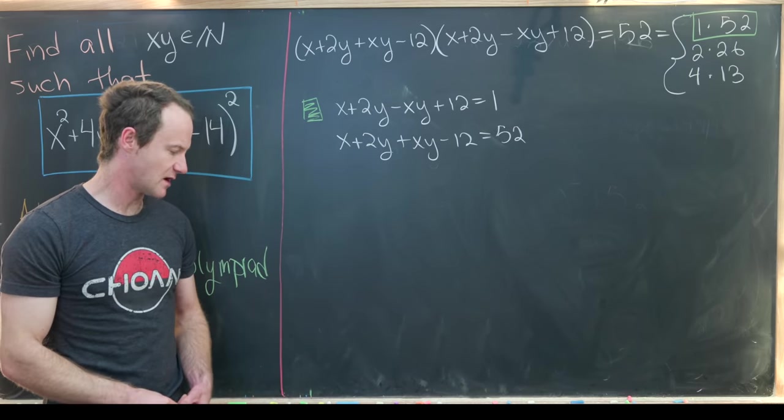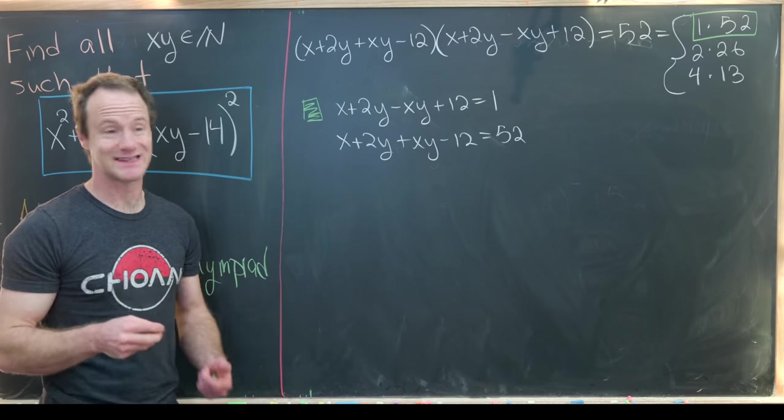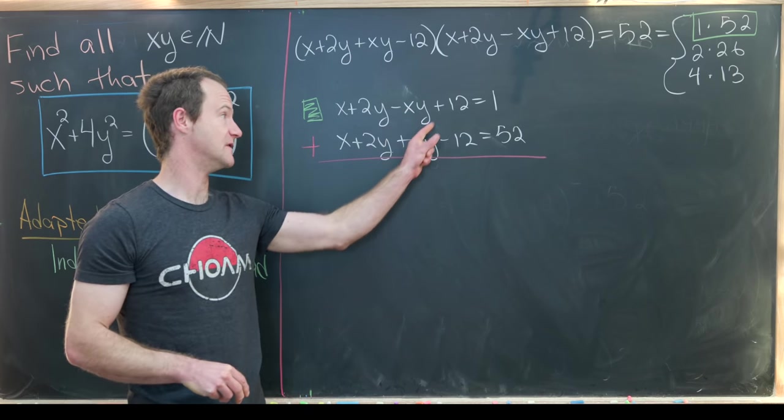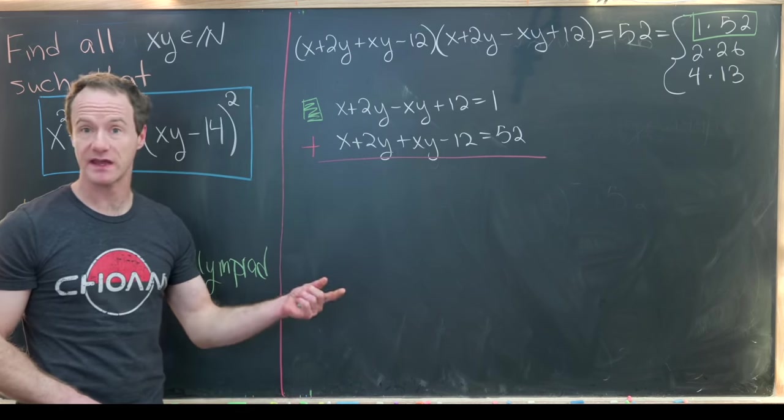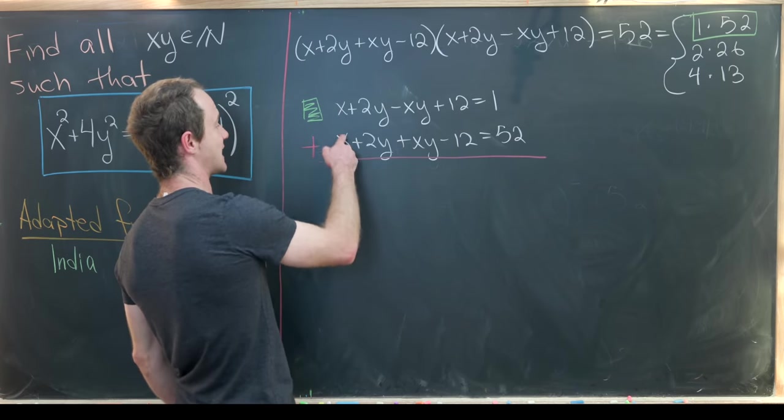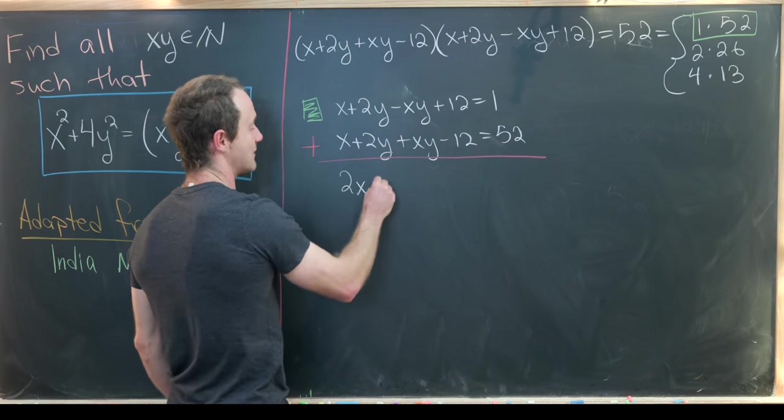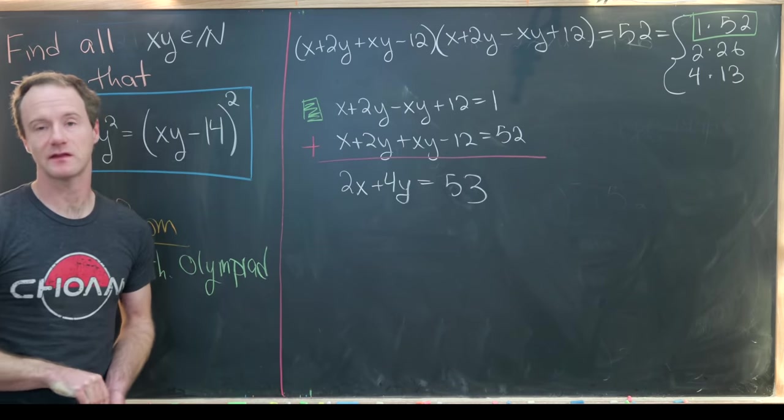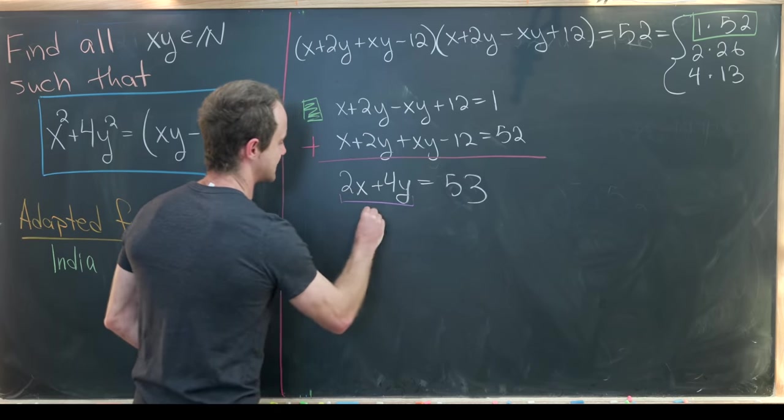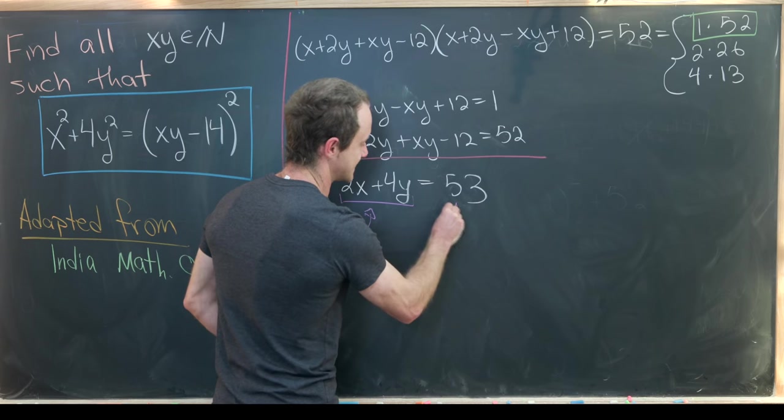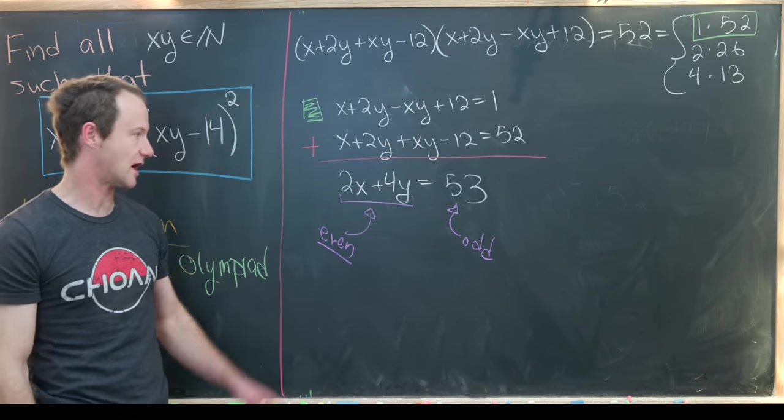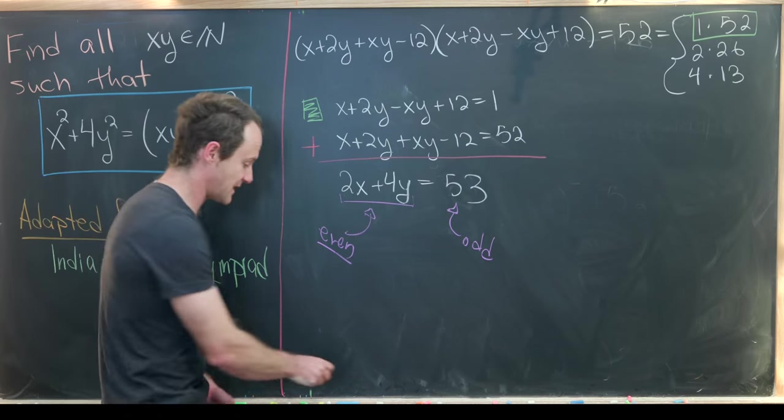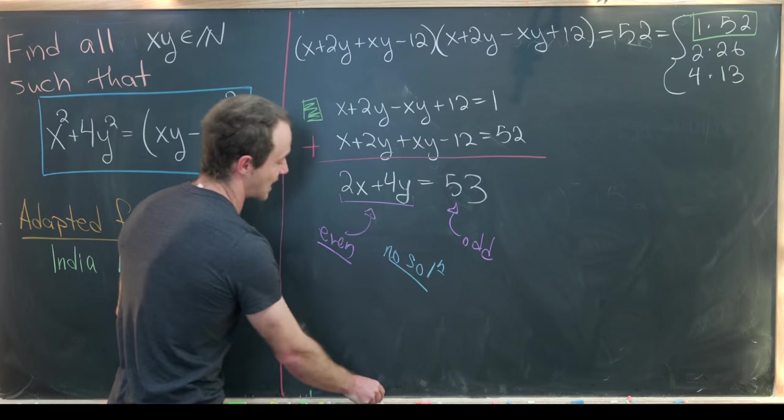How would we like to solve this? We've got a system of equations so maybe we can explore standard strategies for solving systems. Notice if I add these two equations I will cancel off these two terms. We'll have minus xy plus xy cancels and 12 minus 12 cancels. That leaves us with x plus x is 2x, 2y plus 2y is 4y, and then 1 plus 52 is 53. But that should immediately look like a problem because this left hand side is definitely an even number whereas this right hand side is definitely an odd number. 53 is obviously odd. Over here we have 2 times x plus 2y, so that's definitely an even number.